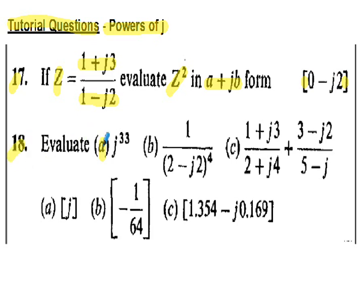Question 18, part a: evaluate j to the 33. Part b: 1 divided by (2 minus j2) to the power of 4 — expand 2 minus j2 squared, simplify, then square again to get the fourth power, then multiply by the complex conjugate. Part c: add the two fractions (1 plus j3)/(2 plus j4) and (3 minus j2)/(5 minus j) — simplify each fraction separately using complex conjugates, then add the real and imaginary parts together. Solutions are shown in square brackets.